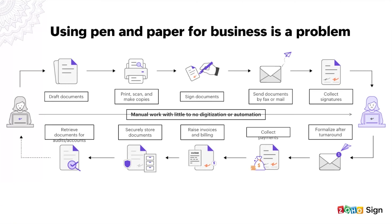Digital transformation is happening everywhere and it's high time that your business digitizes the document signing process. The traditional method is always time consuming and cumbersome and has its own set of disadvantages such as misplacement of important documents, waiting for the courier document, missing the deadline of the document signing, or failing to renew a contract because you fail to keep track of it. A digital signature solution like Zoho Sign will not only help with solving these problems, but will also help you to streamline your workflow.